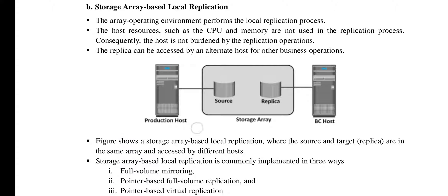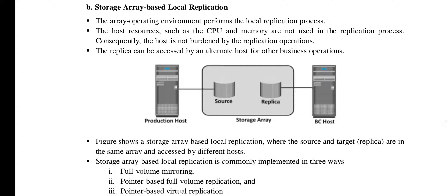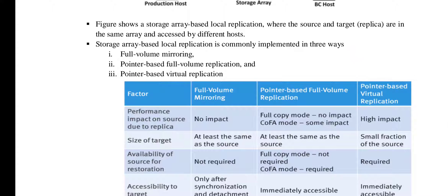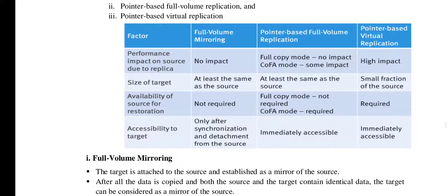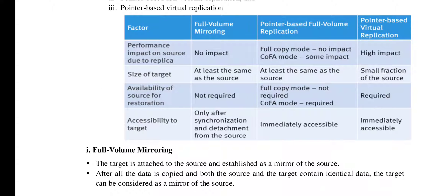In this figure you can find a production host which is attached to the source, and the replica of this source — all within the same storage array. The replica is the one accessed by other hosts, such as the business continuity (BC) host. This works in three ways: full volume mirroring, pointer-based full volume replication, and pointer-based virtual replication, based on four aspects.